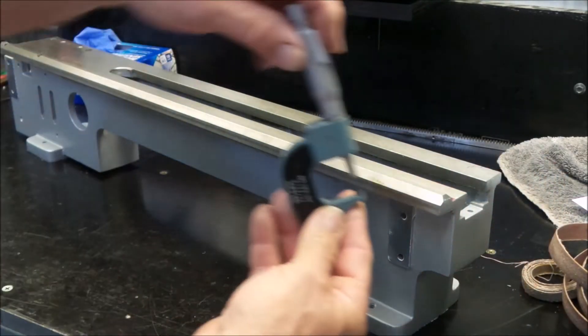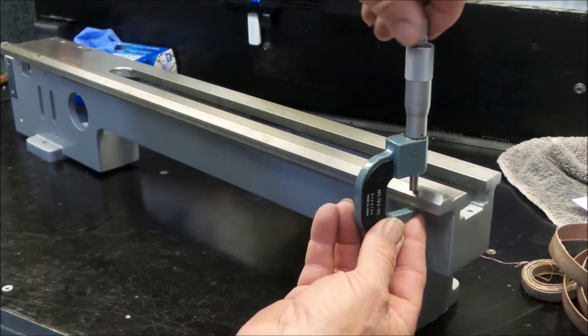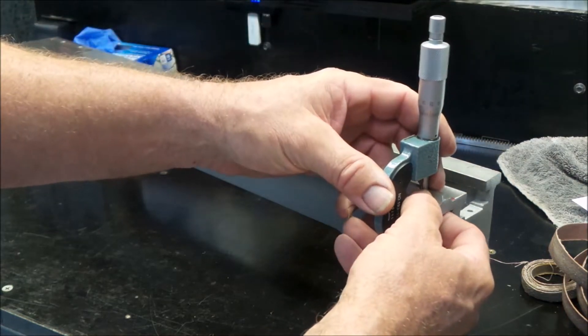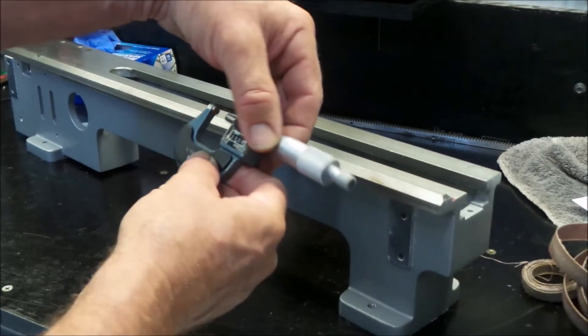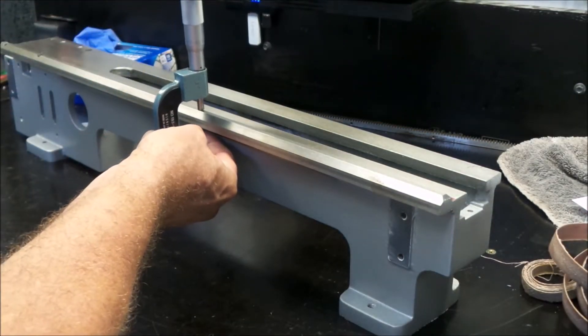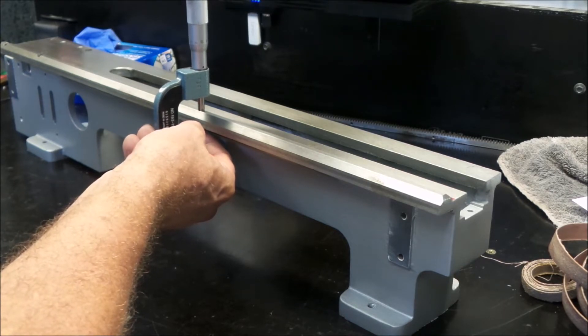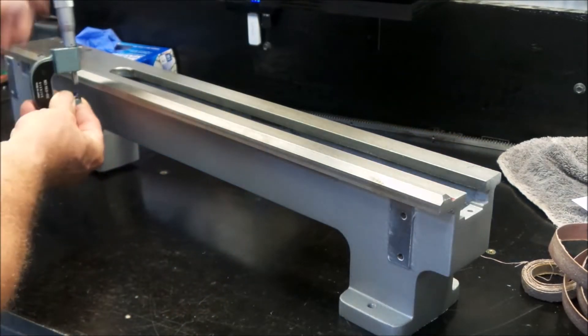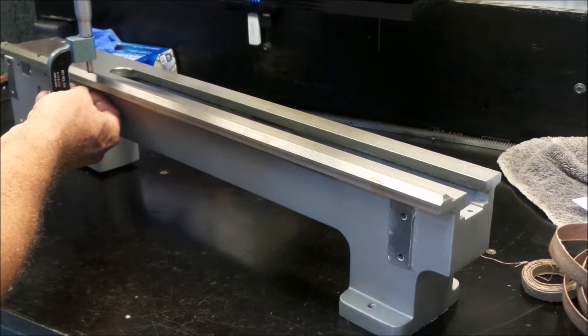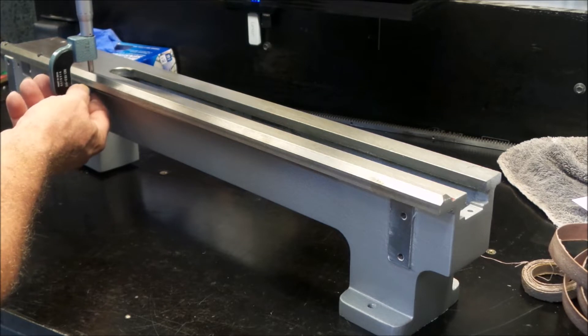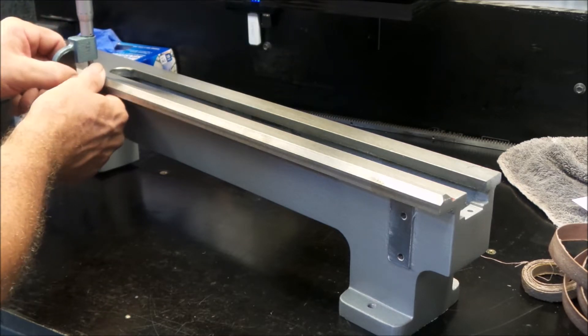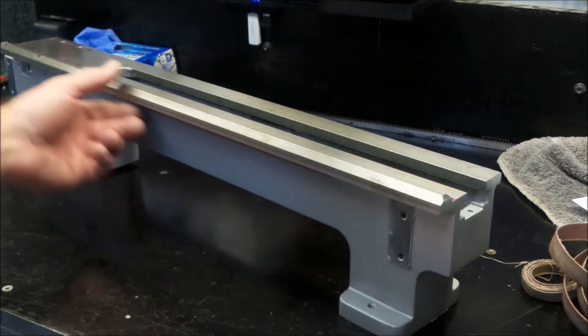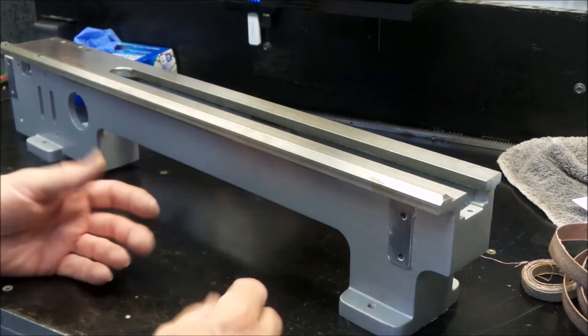That is no good. So let's measure the front way and see what's going on. 13.37, 13.18, 13.21. So we've got the opposite problem on this side. It's fatter down this end and thinner up this end. Well that really sucks because that's got to be fixed.